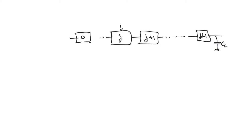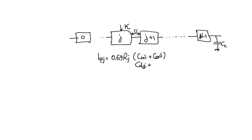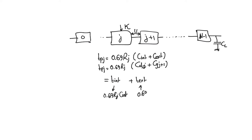Do we make stage j larger or smaller? If we multiply the aspect ratios of all transistors by k — if we magnify it — should we or should we not? The delay of stage j is equal to 0.69 times the resistance of stage j multiplied by the sum of its internal capacitance and the external capacitance it observes. The intrinsic capacitance is typically the drain capacitance of the current stage, while the external capacitance is the gate capacitance of the next stage.